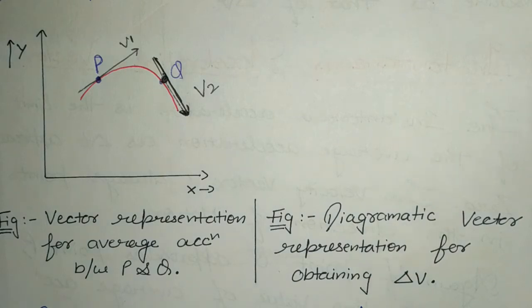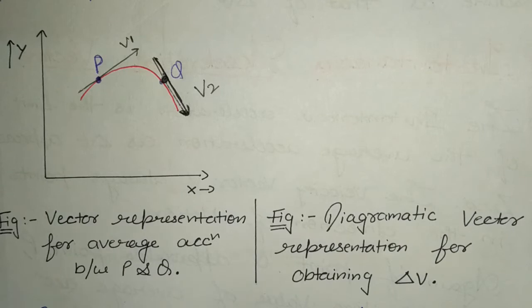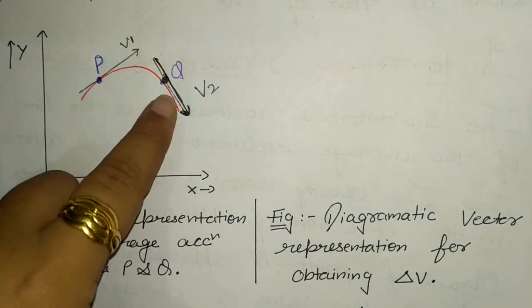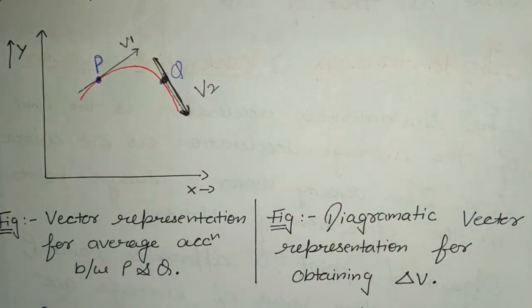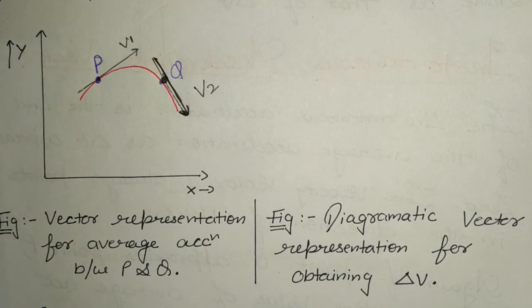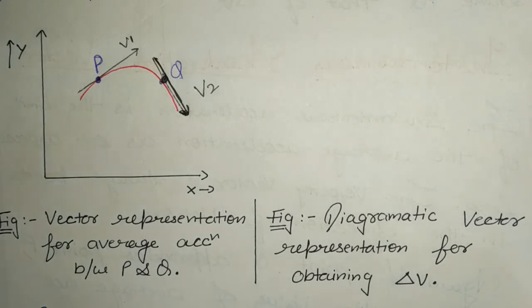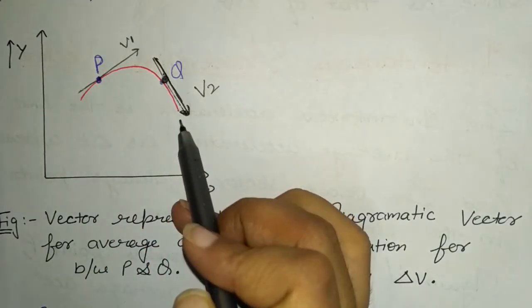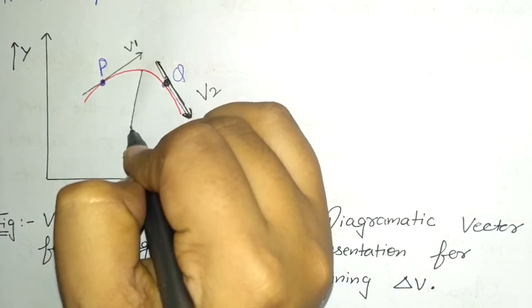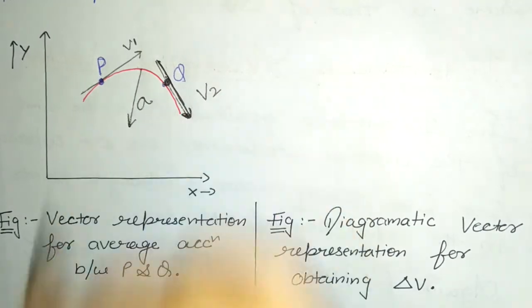Now let's look at what is the direction of acceleration. We have to understand why the velocity of the particle changes. If we see P and Q, then the change in velocity is delta V. The average acceleration vector is defined as the rate at which velocity changes. The direction of this acceleration will be inward, because the outer direction gets inverted.